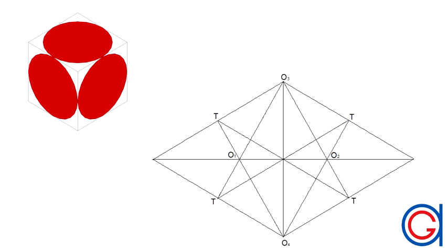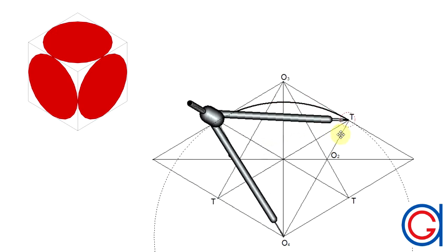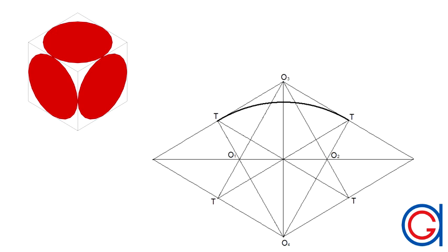The next step we must set our compass on point O4 with radius length O4 t, and we scribe an arc from the upper left tangent point to the upper right tangent point.